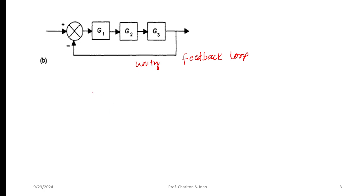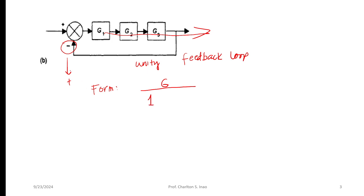What we're going to do is transform this into a standard canonical form of a block diagram. If we have a feedback loop, we look first at the sign convention for the feedback — it's negative, so it becomes positive in our equation. The format is: the feed-forward signal on top, and the denominator uses the inverted sign.